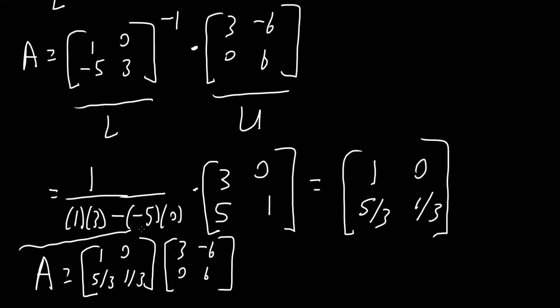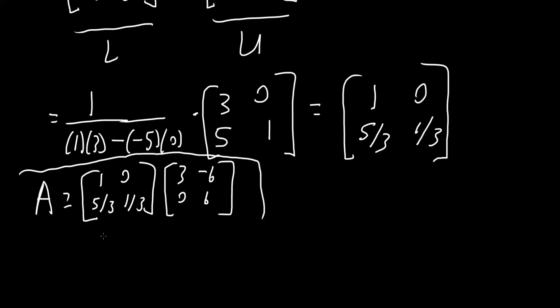This right here is the final answer. So, this was L and this was U. And so, order is very important because U times L is incorrect. It has to be L times U.